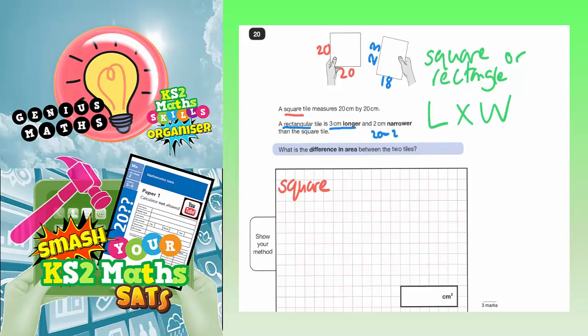So focusing in on the square, the area is length times width and in this case that's 20 times 20. Because it's a square, the length and width are the same. So 20 times 20 is very simple to do in your head. If you cover up the two zeros you can do 2 times 2 which is 4, but then put the two zeros back on. So that will be 400cm squared.